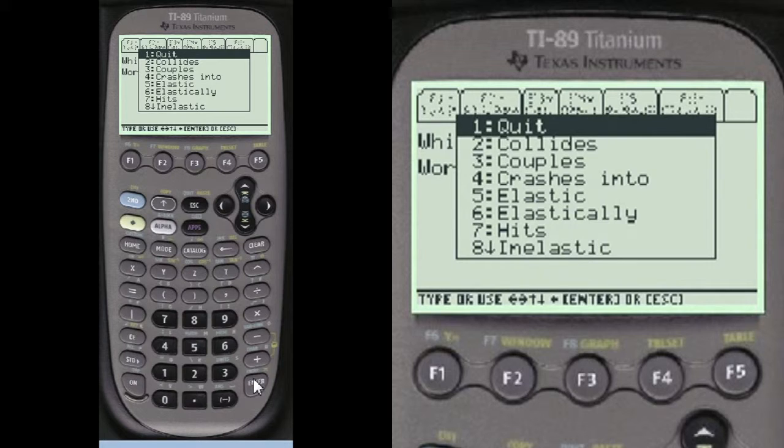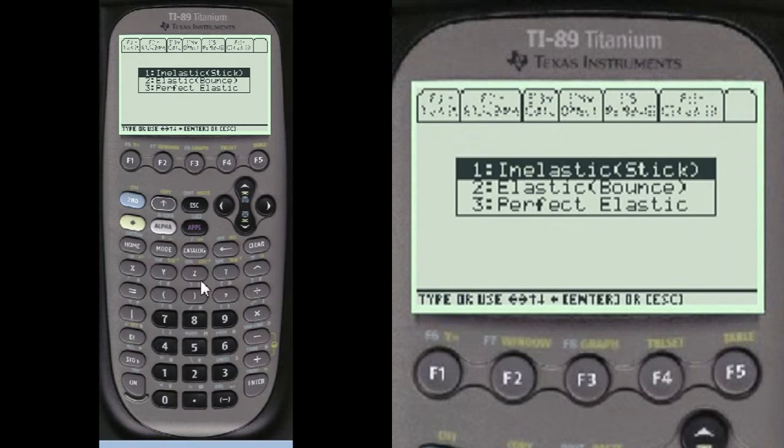And this program that comes up checks whether it's a momentum problem or a collision problem. You look for the words in the problem and it says they're unkindly hit, so we're going to choose hit 7, number 7. And they stick together, so we're going to choose that, number 1.